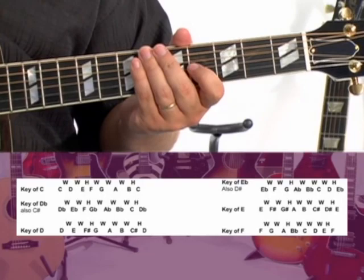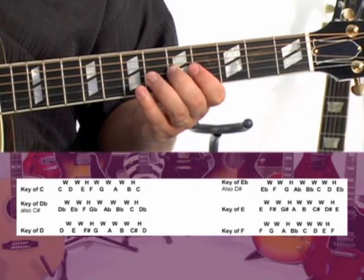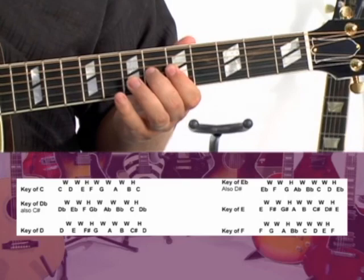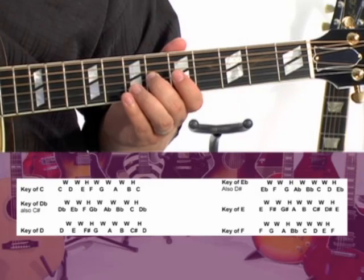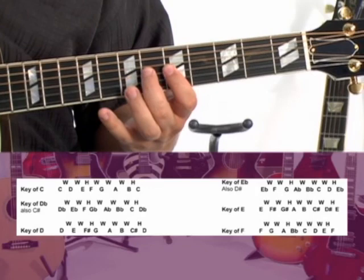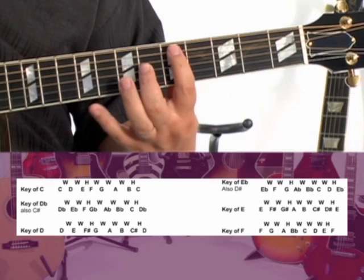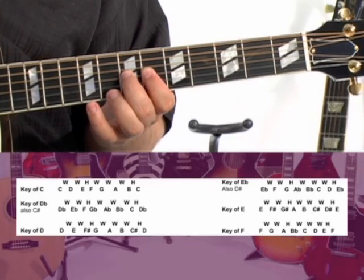Let's start with the key of C major. If we go up one fret, we'll be in the key of Db major. Now Db is the same note as C sharp, so Db and C sharp are the same exact keys — they just have two different names. Now if we go up one fret again and apply the whole, whole, half, whole, whole, whole, half to D, we are now in the key of D major. Up one more fret, we're in the key of Eb major. We go up again, we're in the key of E major.